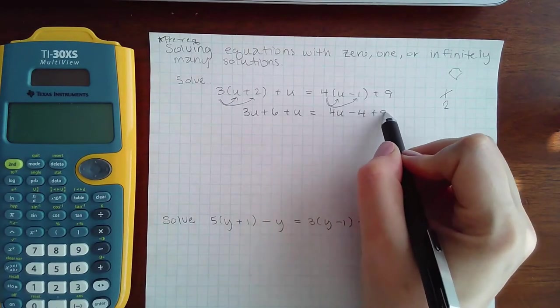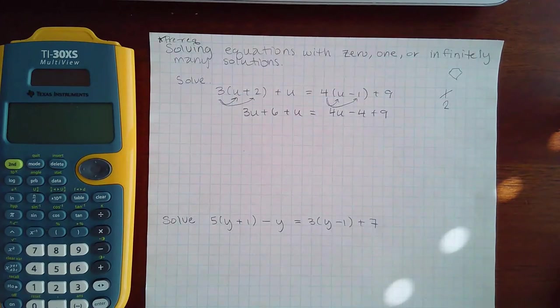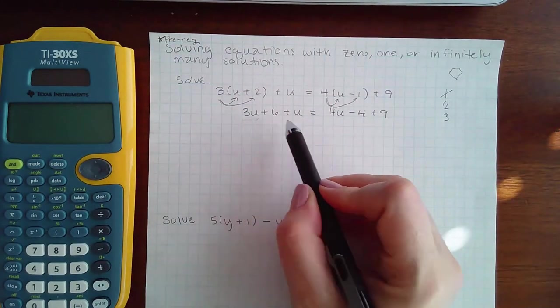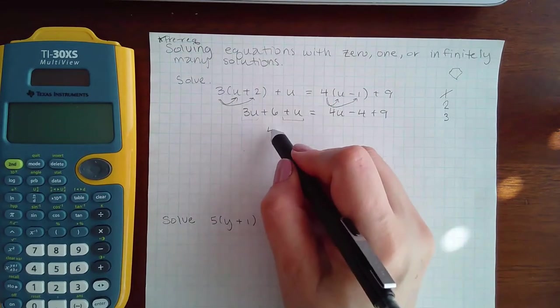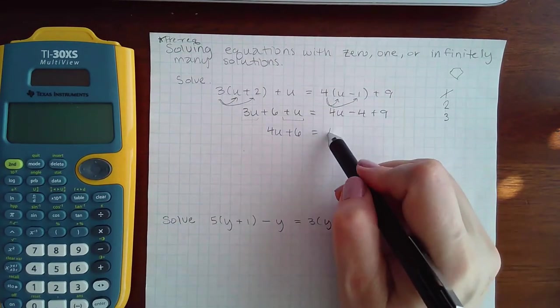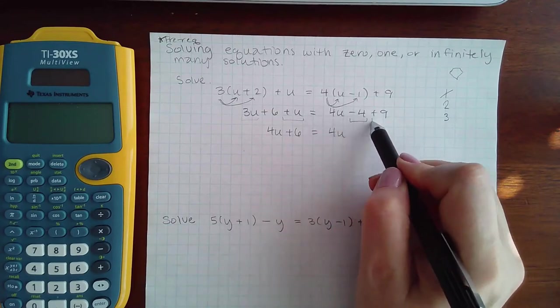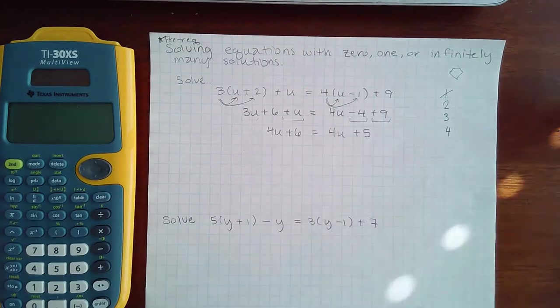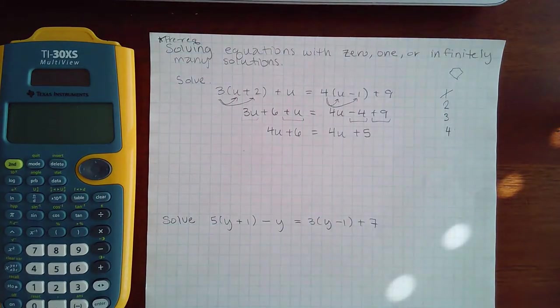Step three is to combine like terms. So on the left I have 3u plus u, which is 4u plus 6. On the right hand side I have negative 4 plus 9, which gives me positive 5. Here's where the crazy thing could or could not happen.